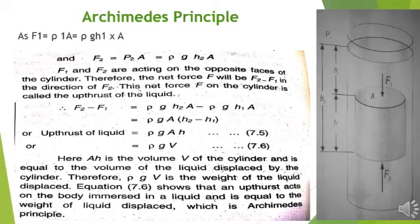Since ρgA is common to both terms, we factor it out: upthrust equals ρgA times (h2 minus h1). We know that h2 minus h1 equals the height h of the cylinder. So the upthrust equals ρgAh. Since area multiplied by height equals volume, the final equation becomes: upthrust equals ρgV.